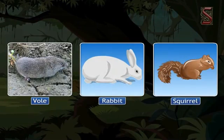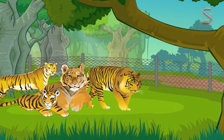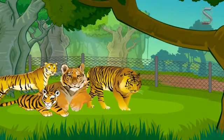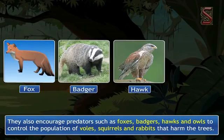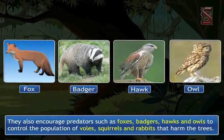You must have seen animals like squirrels often damaging the bark of the trees. In doing that, they harm the phloem of the trees. Animals like the wolves, rabbits, and squirrels damage the trees and plants trying to eat the food stored in the inner layers of the bark. Foresters try to keep off these animals by enclosing new plantations with wire netting. They also encourage predators such as foxes, badgers, hawks, and owls to control the population of wolves, squirrels, and rabbits that harm the trees.